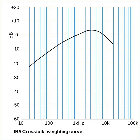Far-end crosstalk (FEXT) measures the interference between two pairs of a cable measured at the far end of the cable with respect to the interfering transmitter. Equal-level far-end crosstalk (ELFEXT) measures the FEXT with attenuation compensation. Alien crosstalk (AXCT) is interference caused by other cables routed close to the cable of interest, as opposed to signals contained in the same cable.